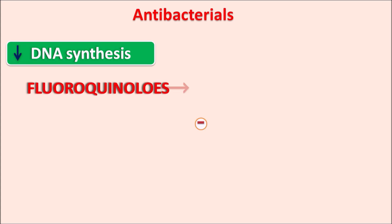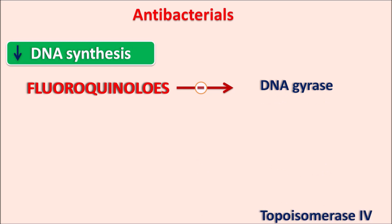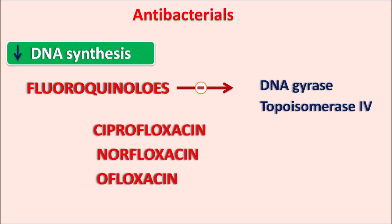The fourth category inhibits DNA synthesis. We have fluoroquinolones, ending with the suffix -floxacin. These drugs inhibit the DNA gyrase enzyme, also called topoisomerase II, and also inhibit topoisomerase IV. These two enzymes relieve topological strain during DNA replication, which is blocked by fluoroquinolones. Examples include ciprofloxacin, norfloxacin, ofloxacin, and moxifloxacin.